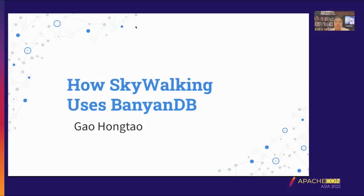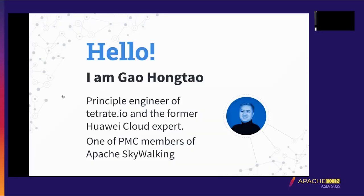It's great to be here with you today. In this track we'll talk about a new observability database. We all know that there are three pillars of observability: trace, log, and metrics. There are various databases focused on metrics, for example InfluxDB. For trace and log we have other solutions, for example Elasticsearch and Loki. How to combine all three data models together to optimize all of them is a big issue for us.